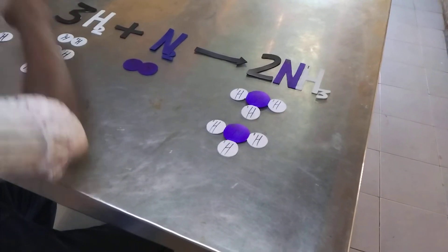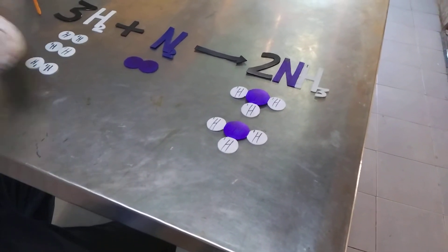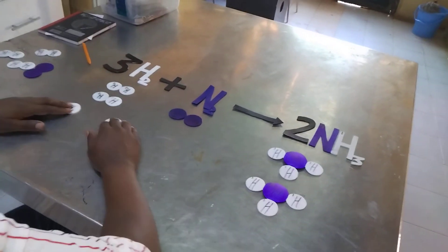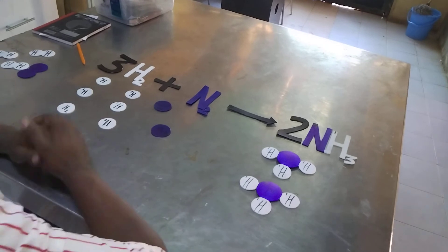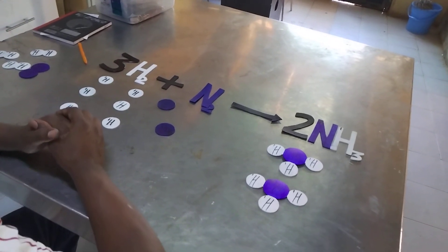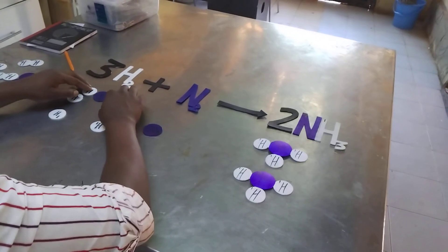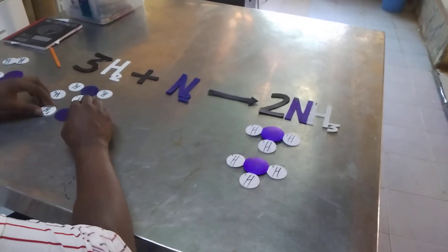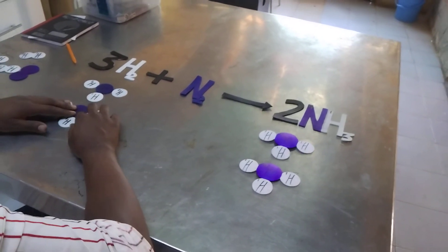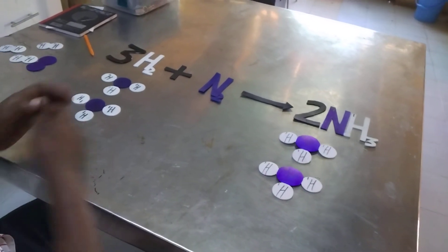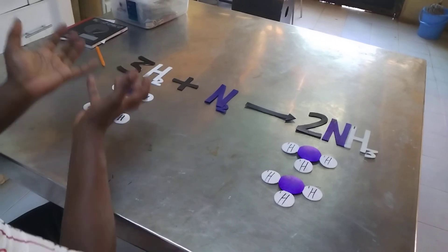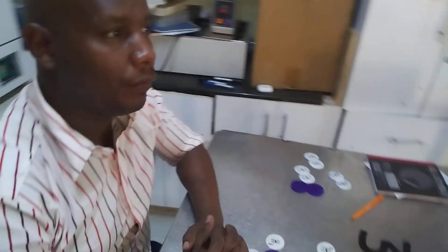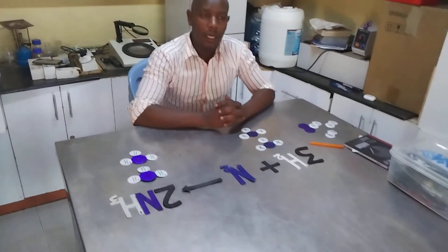These detachable molecules can detach, and we are going to replace this one and that one here. When this reaction is taking place, these are the activities that occur: the molecules will break into individual atoms — that is bond breaking — followed by movement of these atoms, and they join together to form new bonds. That forms one molecule of ammonia, and another forms here, giving us two molecules of ammonia, just as shown on this side.